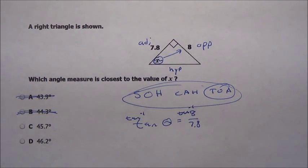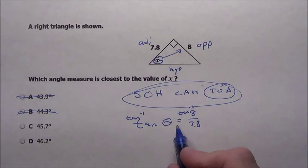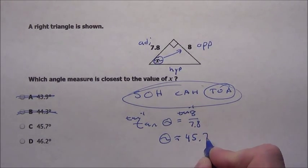Whenever we're trying to find an angle, we're going to always have to end up using the inverse tangent or inverse sine or inverse cosine. You've got to use that inverse button. When I do that, theta is coming out to be 45.7 degrees.